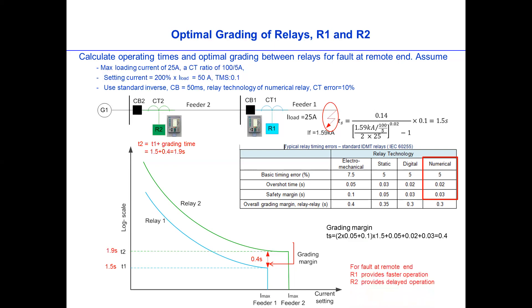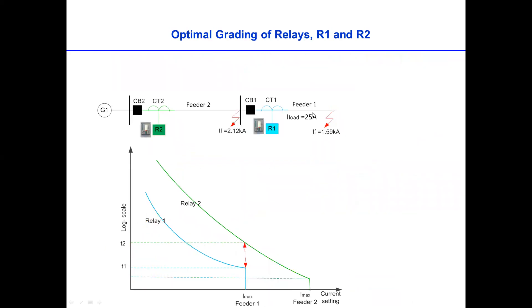What we can learn from this is, Relay 1 will provide faster operation, which is 1.5 seconds, and Relay 2 will provide a delayed operation. Of course, it has to wait for Relay 1 first to trip. The main section is R1 for fault at the end, and R2 will provide backup for this fault.